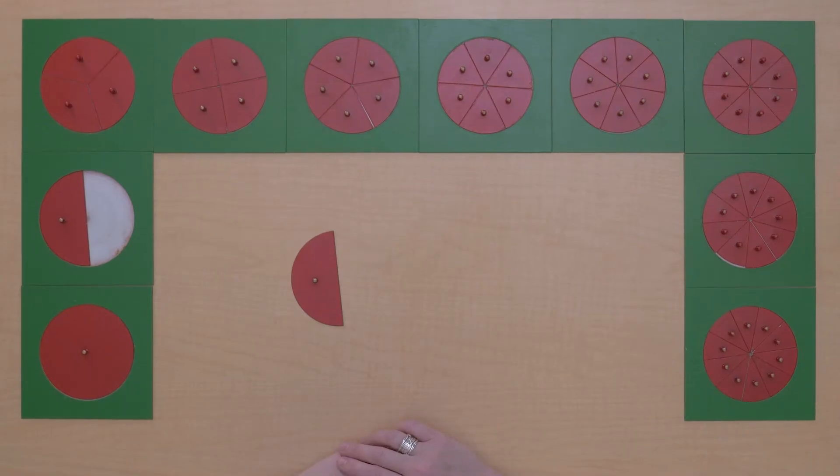Today we're going to do some more fraction subtraction. I want to have 1 half and I want to subtract 2 tenths. I want to take away 2 tenths. That does not look easy at this point, does it?